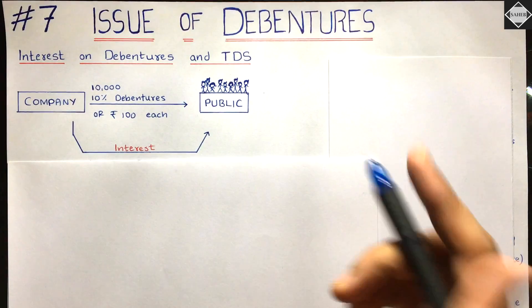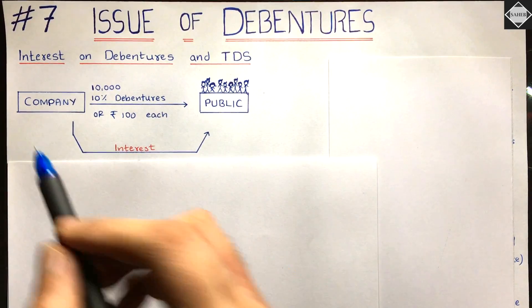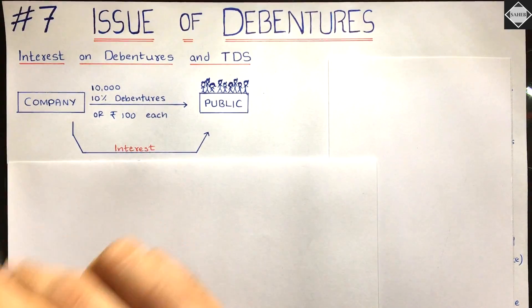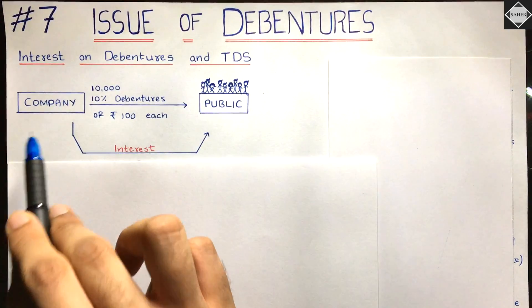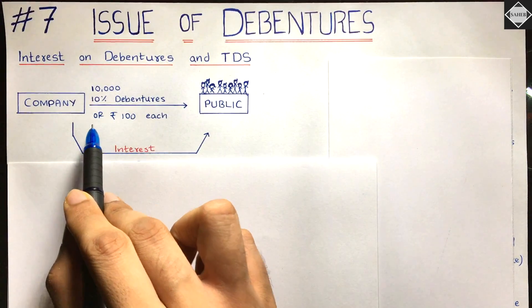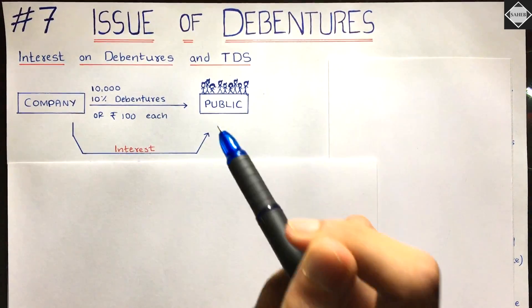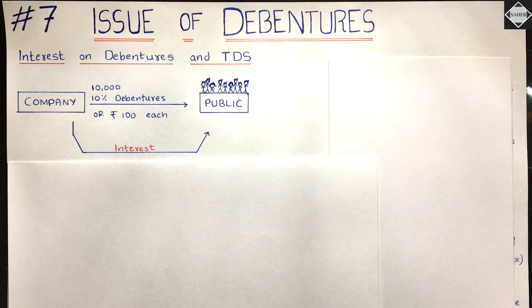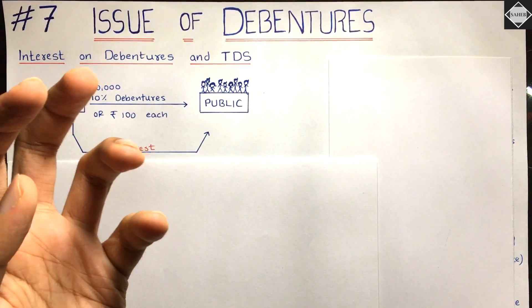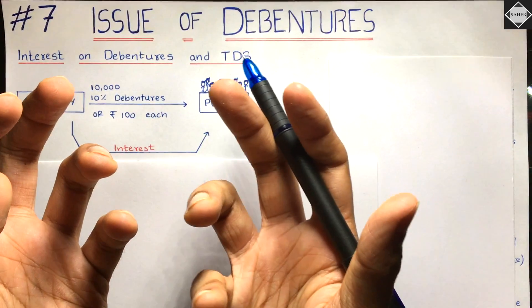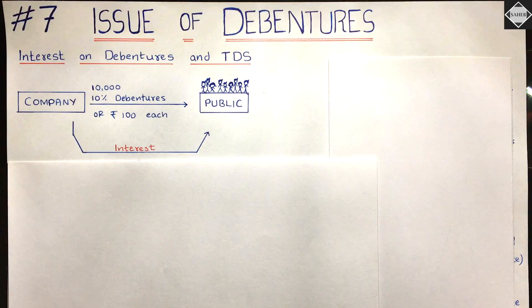The concept of interest on debentures and TDS is really simple and straightforward. Let's say there was a company called ABC Limited that wanted to raise finance from the public, so it issued 10,000 debentures of rupees 100 each. The people who subscribed became debenture holders. The company received 10 lakhs — 10,000 debentures of rupees 100 each issued at par.